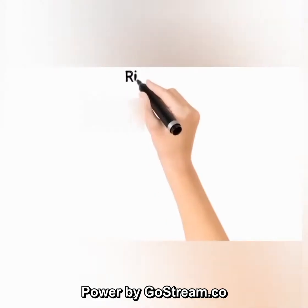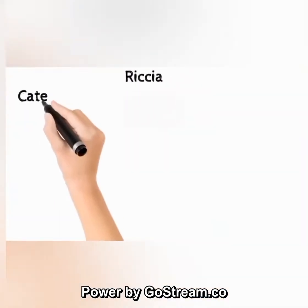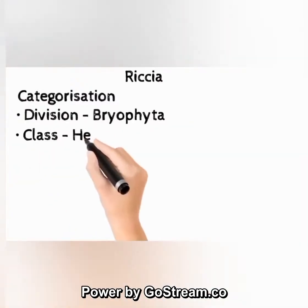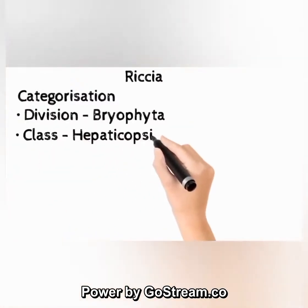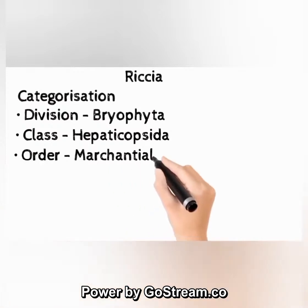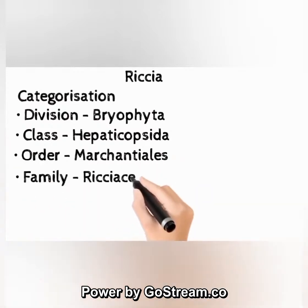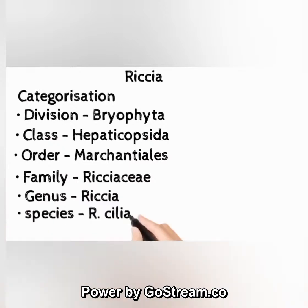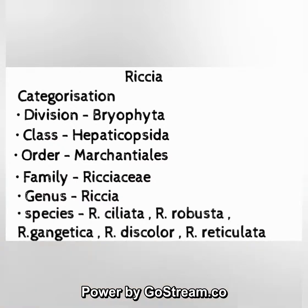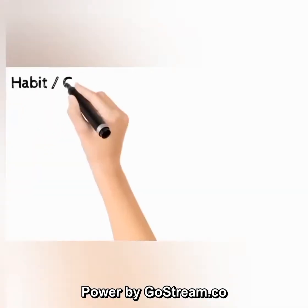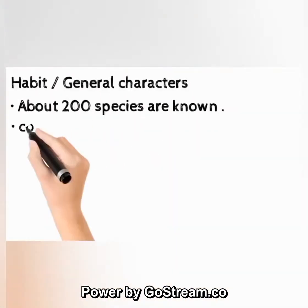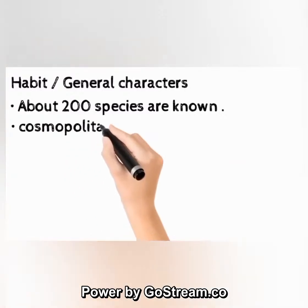Riccia categorization: division Bryophyta, class Hepaticopsida, order Marchantiales, family Ricciaceae, genus Riccia. Species include R. ciliata, R. robusta, R. gangetica, R. discolor, R. reticulata, and so on. Habit: about 200 species are known; cosmopolitan genus. Indian species number about 33, including R. gangetica and R. pandae.